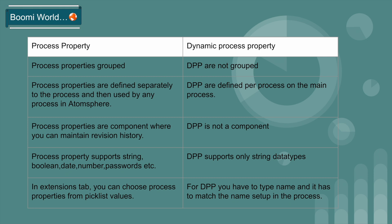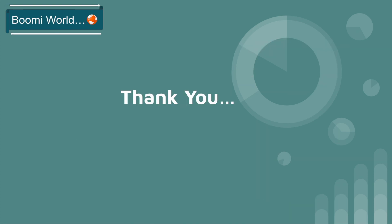So these are the main differences between process property and dynamic process property. Hope you understand today's video. In coming videos I'm going to explain connector shapes and how to create a process from start to end, and all those topics. If you haven't subscribed to my channel, please go and subscribe now. If you like my video, please like, share, and subscribe to our YouTube channel.